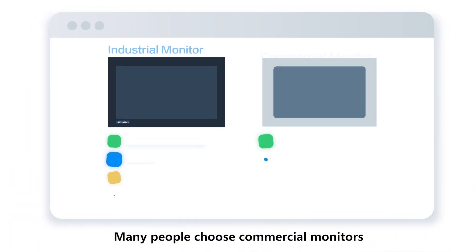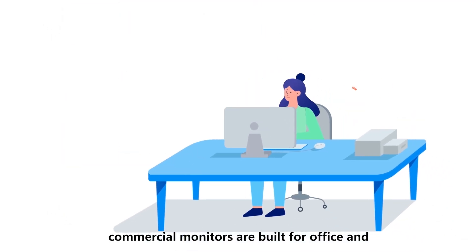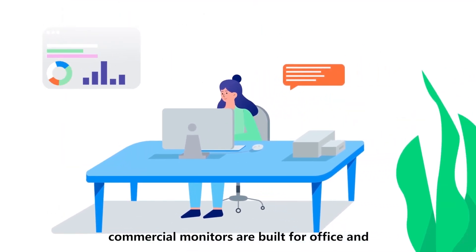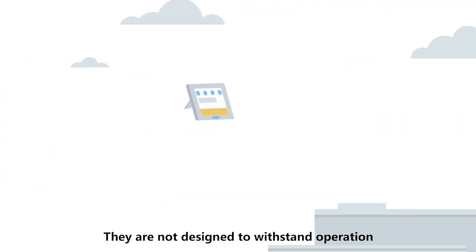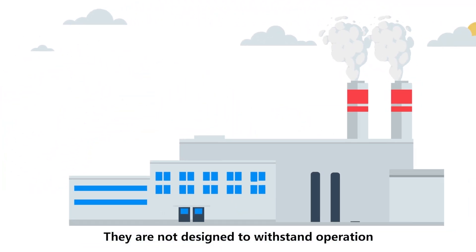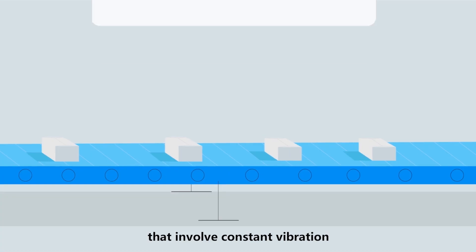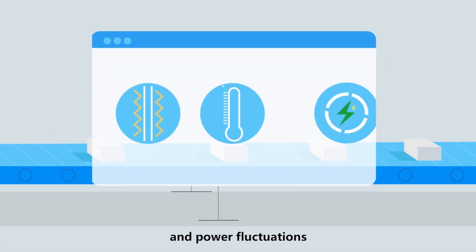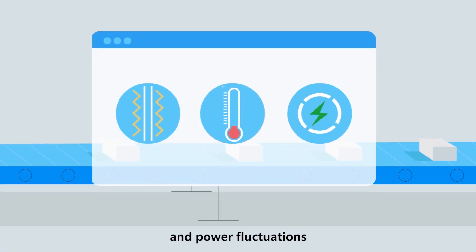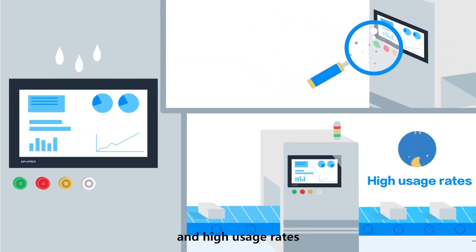Many people choose commercial monitors because of their low price. However, commercial monitors are built for office and retail environments. They are not designed to withstand operation in harsh industrial settings that involve constant vibration, temperature and power fluctuations, humidity, dirt, dust and high usage rates.